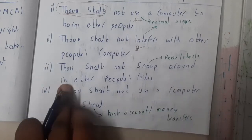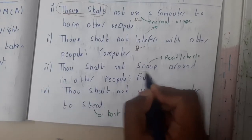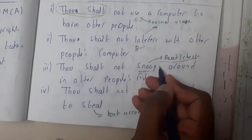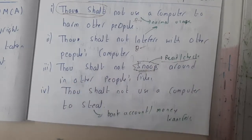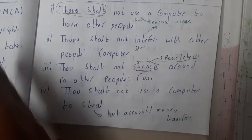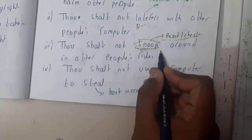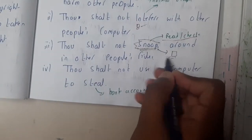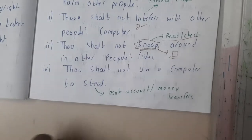The third commandment: do not snoop around in other people's files. Snoop means reading or checking — it's the word used for dogs when they check a smell. So even if you get access to your friend's system, you should not check their directories and files. That's basic common sense.